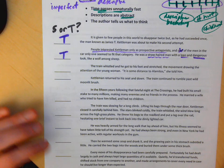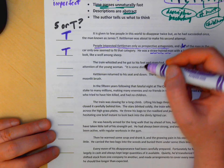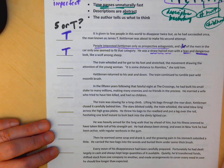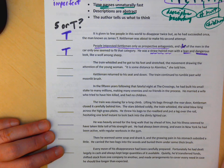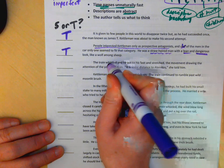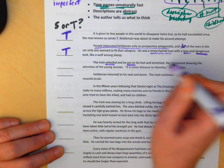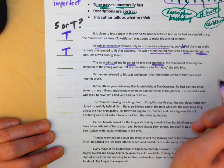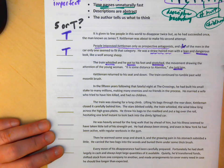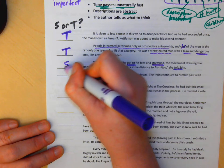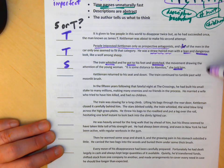Notice the difference between those two and this one. The train whistled and he got to his feet and stretched. The movement drawing the attention of the young woman. It is some distance to Alamitos, she told him. There's our past tense verb. The train does something, he did something, she did something, then she speaks. She did something. And we are now in showing. We are living that scene with our character.